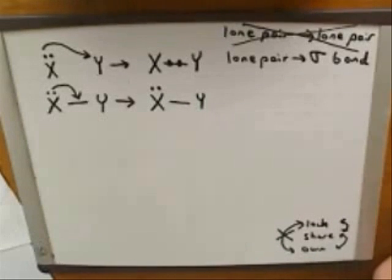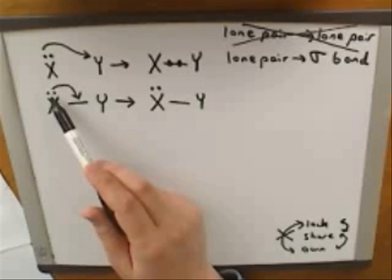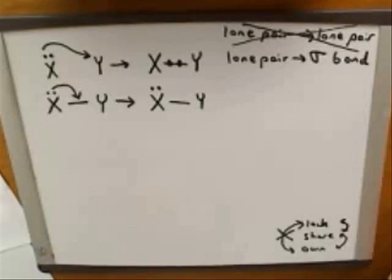So far I've just redrawn the original picture. Now let's make some modifications. Where are the electrons coming from here? The tail of this arrow is on this lone pair, so the electrons are coming from the lone pair. So I'm going to erase the lone pair.